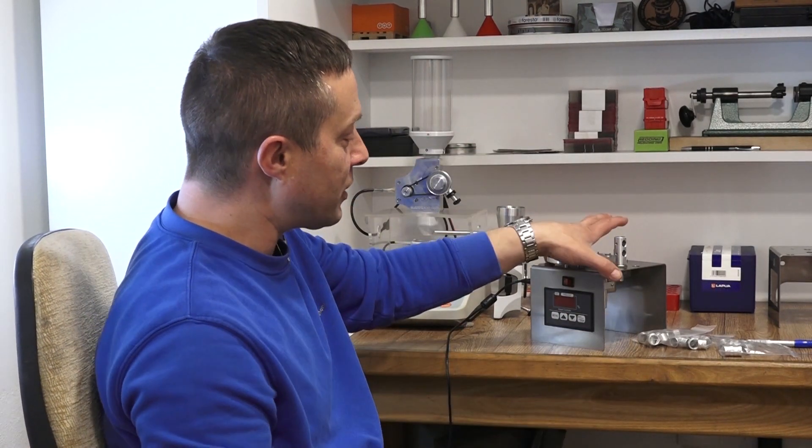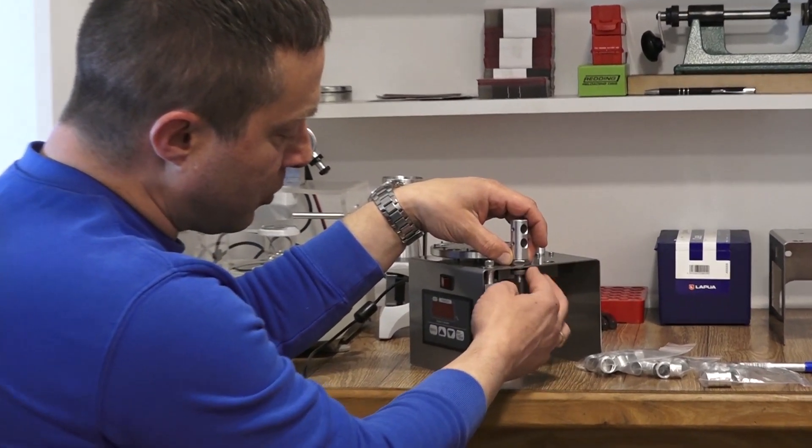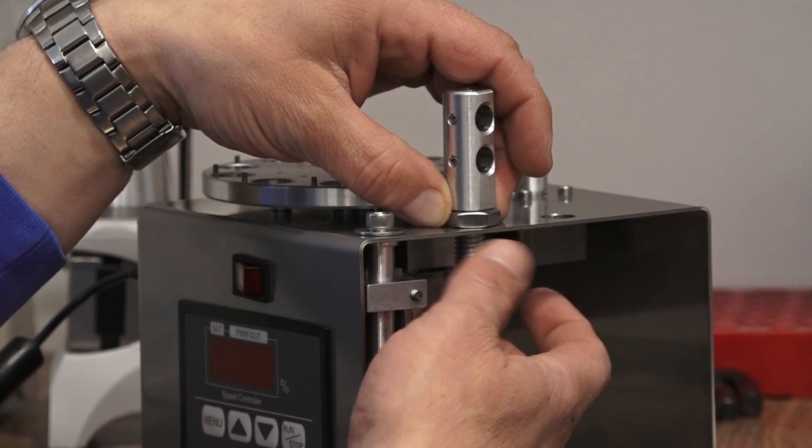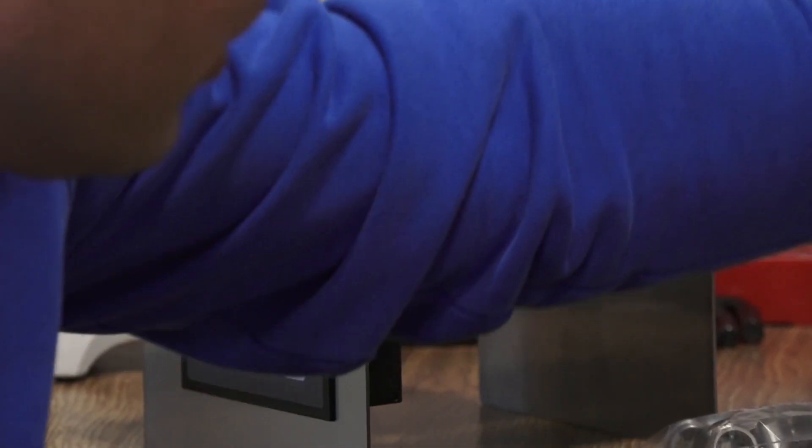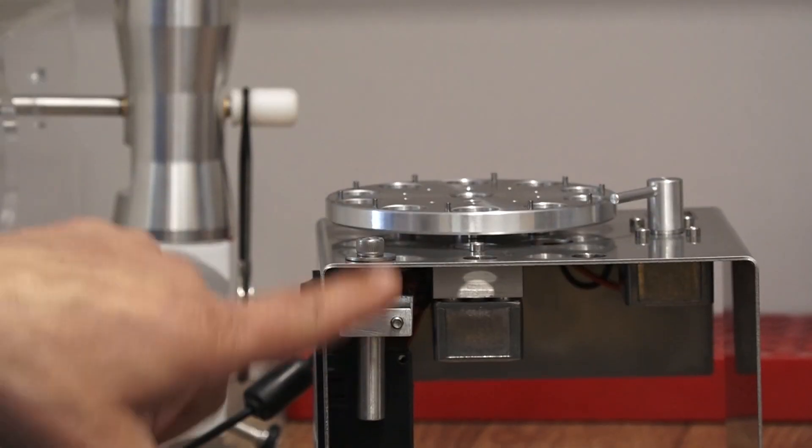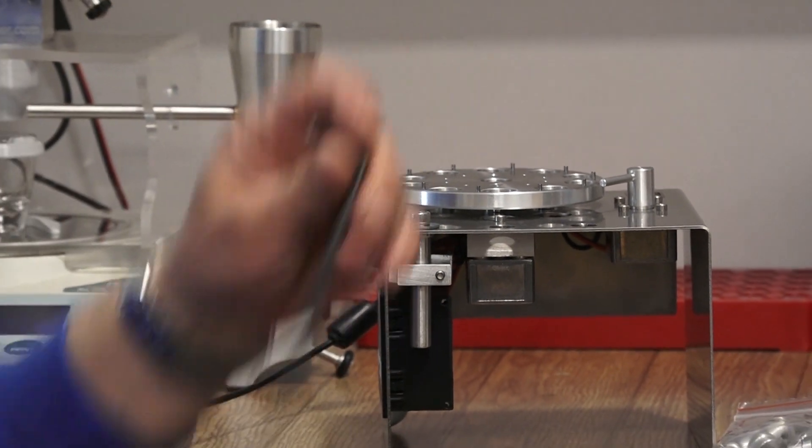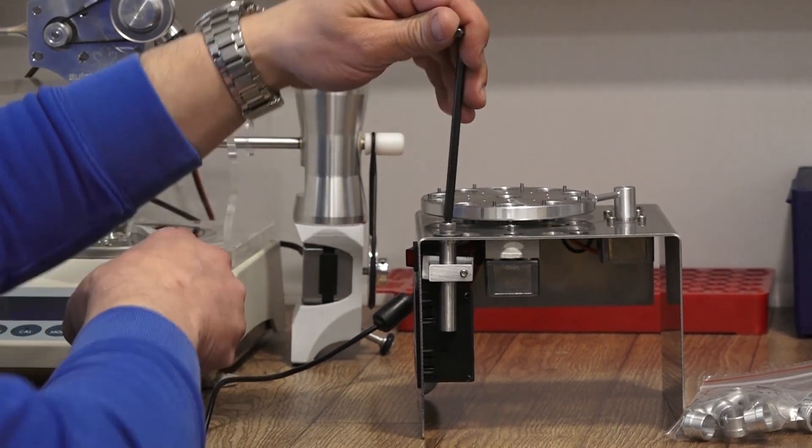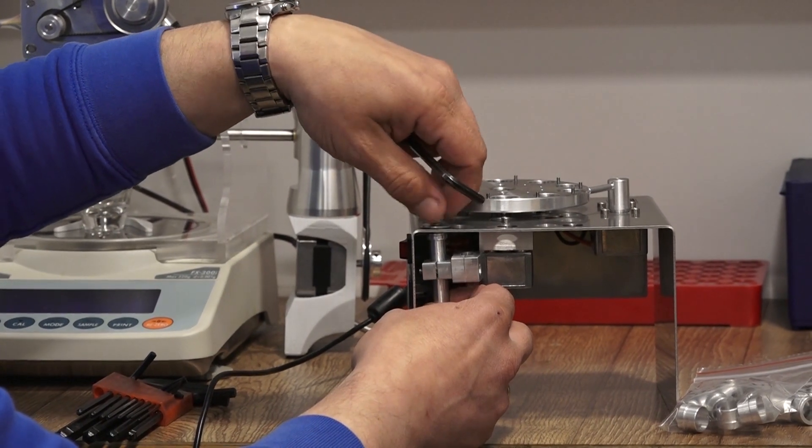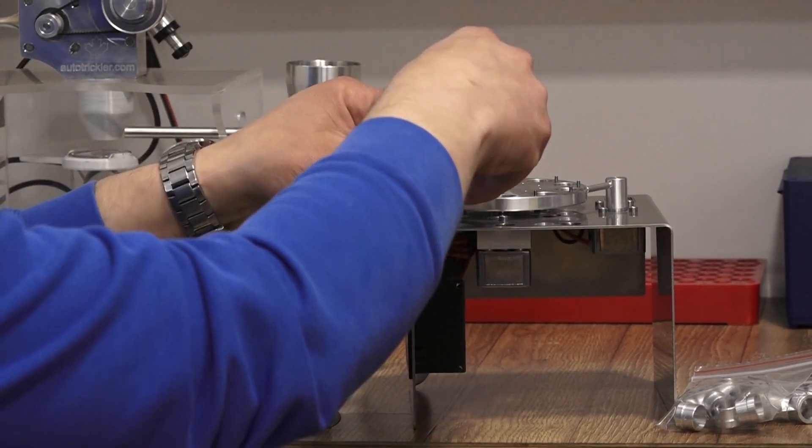So those are the differences between the previous models and this one. Also, what I would like to point out, because some of the customers ask me, the torch holder is always included and only one torch holder is included with the unit. But it's mounted upside down because of the packaging and transport. So once you get it, just unscrew it and mount it as it should be mounted. Easy task.